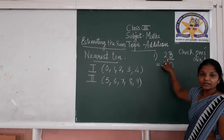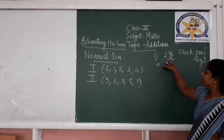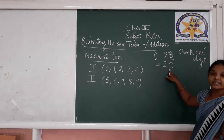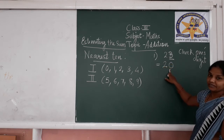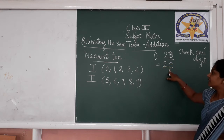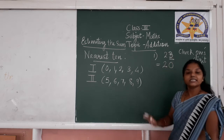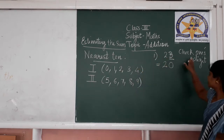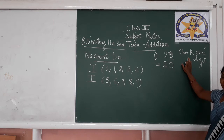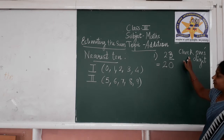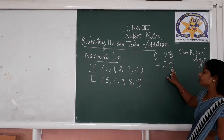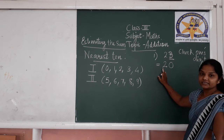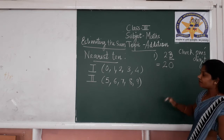That means the rounded-off number becomes 20. Just keep in mind: to round to the nearest 10, check the digit at 1's place. If it is in Group 1, write down 0 in its place and keep the remaining digit as it is.